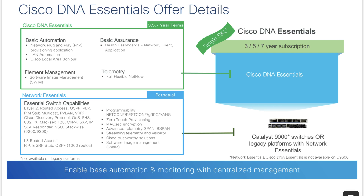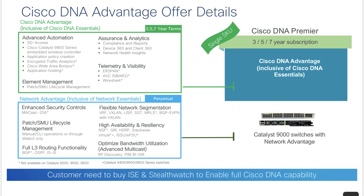Cisco is offering DNA Center to a lot of customers, and you may or may not need the subscription depending on how you handle your network in the future. All of us want to automate, and we have more boxes with fewer people, so centralized management is important — but you can do centralized management in different ways. Just keep in mind the subscription is not optional, it's mandatory, so you need to buy it even if you don't use it, at least for three years.